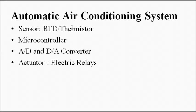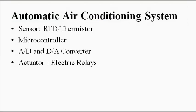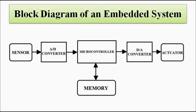Similarly, we can have an automatic air conditioning system. Here a temperature sensor measures the room temperature, and when it goes above a certain value, the air conditioning in the house gets automatically activated using electrical relays or any other electrical actuator. When the temperature goes below a certain threshold value, it gets automatically turned off. It can be programmed for summer, winter, or other seasons, and the threshold temperatures can be changed or altered. These are some examples of systems which involve embedded system technology as part of IoT.